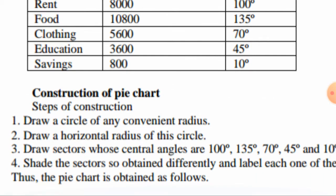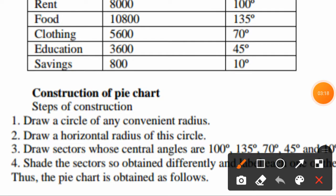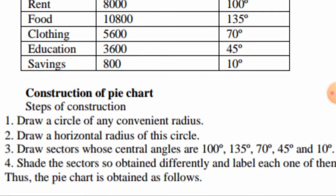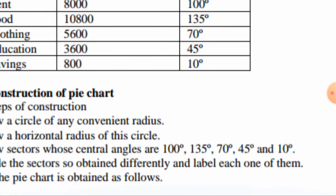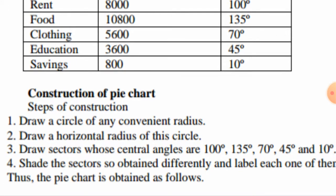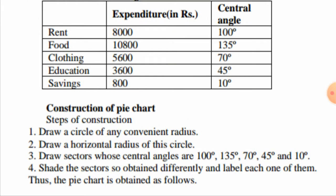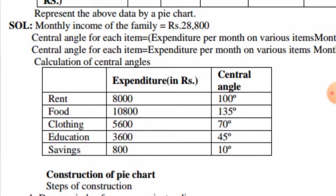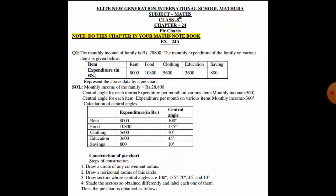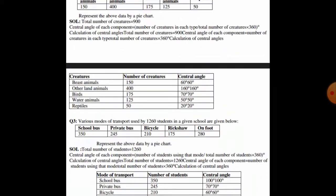Steps of construction: first, draw a circle of any convenient radius. Second, draw a horizontal radius. Third, draw sectors whose central angles are 100°, 135°, 70°, 45°, and 10°. Then shade each sector differently and label them. Thus the pie chart is obtained.